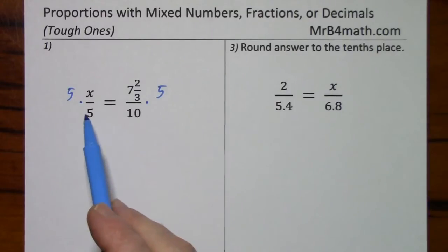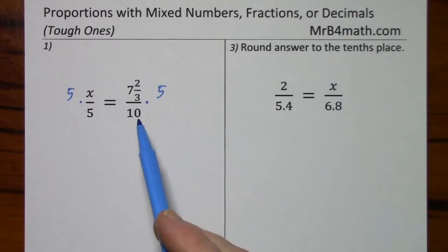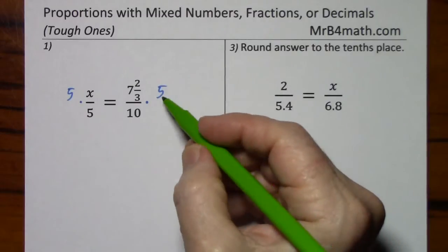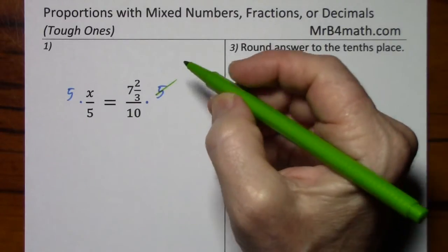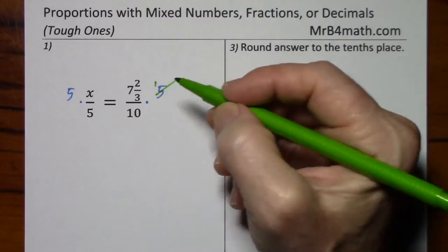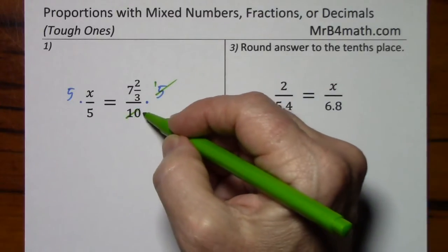But since all I have to do is say times 5 and times 5, I'll go ahead and do that. This side's cleaned up because these 5s are going to cancel. Over here, I can just deal with what I've got. Notice with the 5 and the 10, the common factor of 5 cancels very easily. 5 goes into 5 once. 5 goes into 10 twice.